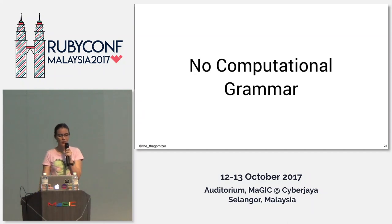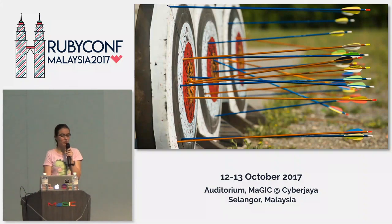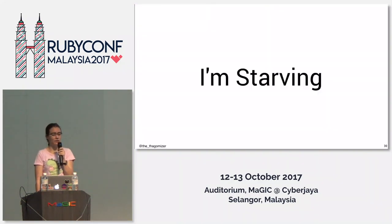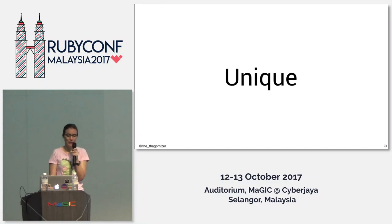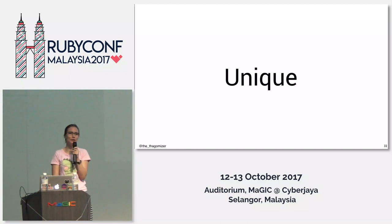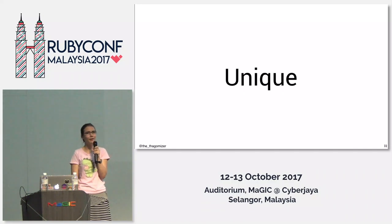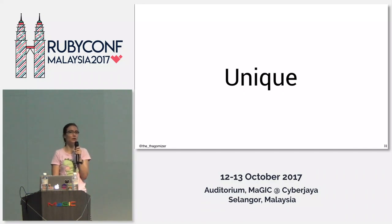Human languages are much harder than computer languages — it's easy to make a flow chart for a valid Ruby phrase. Another big challenge is that humans are really bad at precision. I could say 'I'm starving' — probably not literally true. I could say 'you look freezing' — also most likely not. And the word 'unique' is getting less unique over the last 30 years; there's a good probability now that when someone says unique, they mean unusual. Language is constantly evolving, which also makes it hard to write programs that understand it.